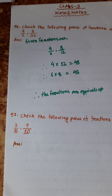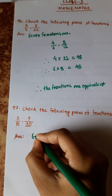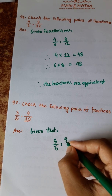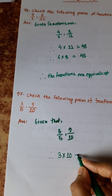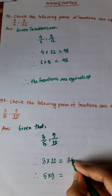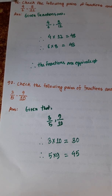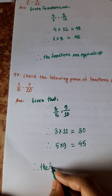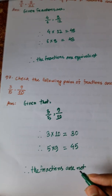Question 97: Check whether the following pair of fractions are equivalent or not: 3/5 and 9/10. Using cross multiplication: 3 × 10 = 30, but 5 × 9 = 45. The results are different, which means these two fractions are not equivalent to each other.